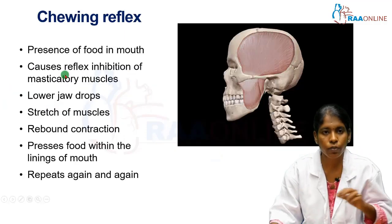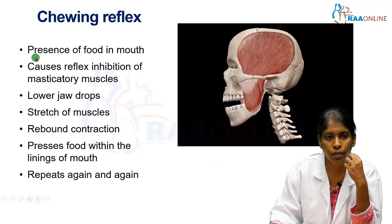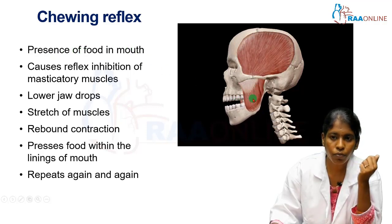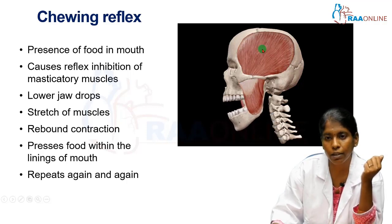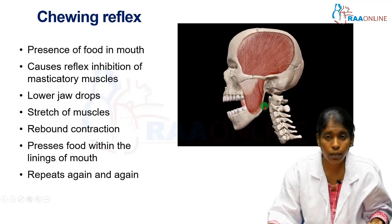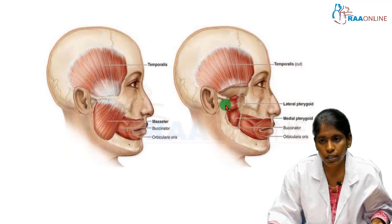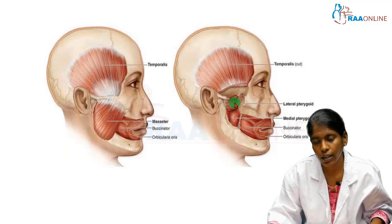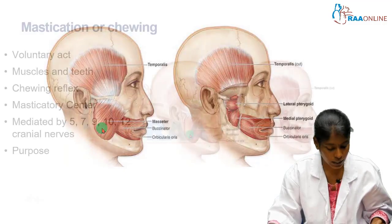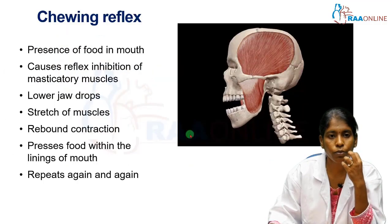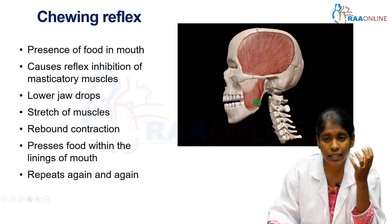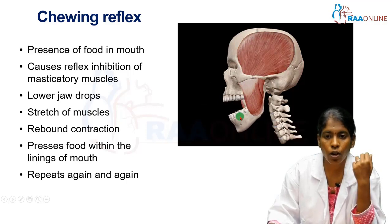Now let us see the steps of the chewing reflex. As we intake food, the presence of food in the mouth causes reflex inhibition of the masticatory muscles. The masticatory muscles include the temporalis, masseter, medial pterygoid, and lateral pterygoid. As a result of this reflex inhibition, these muscles relax and the jaw drops down. This dropping of the lower jaw results in stretching of the muscles.